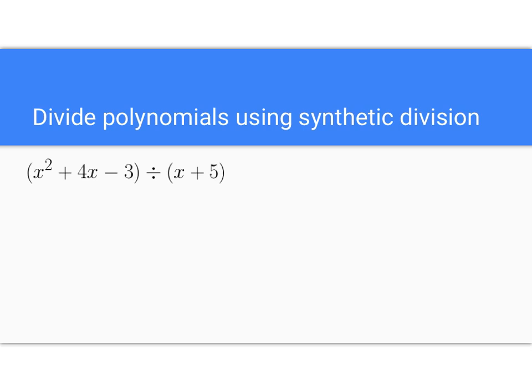Now, if I want to do that same problem using synthetic division, synthetic division can only be used if you're dividing by something that's in the form x minus a. The coefficient on x has to be a 1, and then you have to be subtracting just a number. So in this case, the a that we're subtracting is negative 5. Draw a little box, put a negative 5 in the box. Then you look at the coefficients of this little guy right here. 1, 4, negative 3. Then we say 1, 4, negative 3.